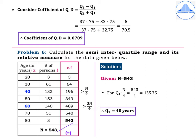To find Q1 and Q3 for discrete data, find the cumulative frequencies: 3, 64, 196, 349, 489, 540, 543. Remember the last CF value should match N, as highlighted in purple.